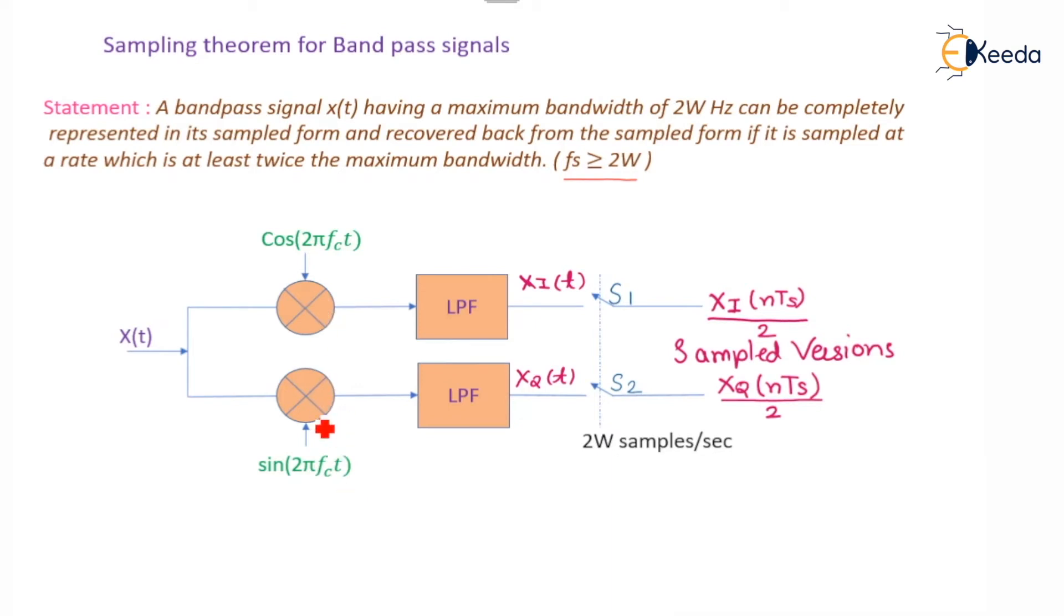These are the quadrature carrier signals coupled to the low-pass filter. Now here I and Q signals are generated, Xi(t) and Xq(t). These sampling switches S1 and S2 are taking samples at 2W samples per second. The output here is Xi(nTs), where n is the number of samples taken over time Ts.